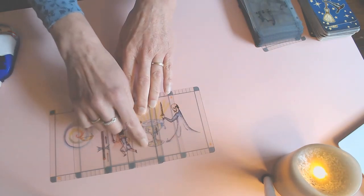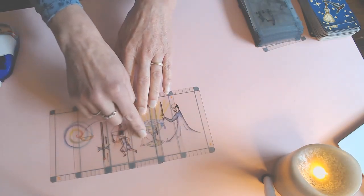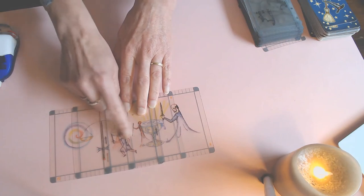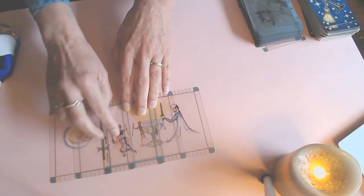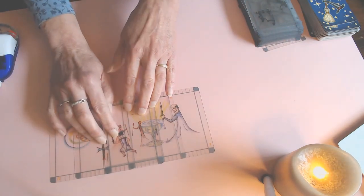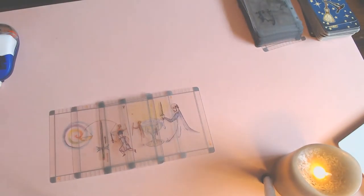Then we've got the Cups - that's Cancer - so it could be a cusp baby. The Ace is lying on two cards so it could be a cusp baby.